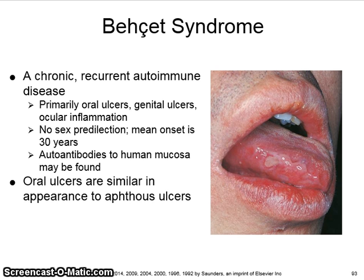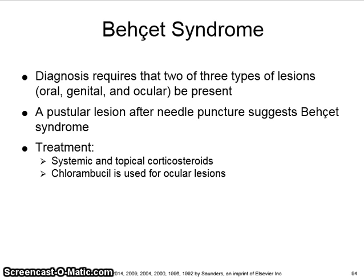There is no sex predilection. The mean onset is around 30 years of age. Autoantibodies to human mucosa may be found. Oral ulcers are similar in appearance to aphthous ulcers. There is an increased prevalence of this syndrome in individuals from the Mediterranean region and Asia, but it is rare in the United States. Diagnosis requires that two of three types of lesions be present: oral, genital, and/or ocular. A pustular lesion after needle puncture suggests Behçet syndrome.